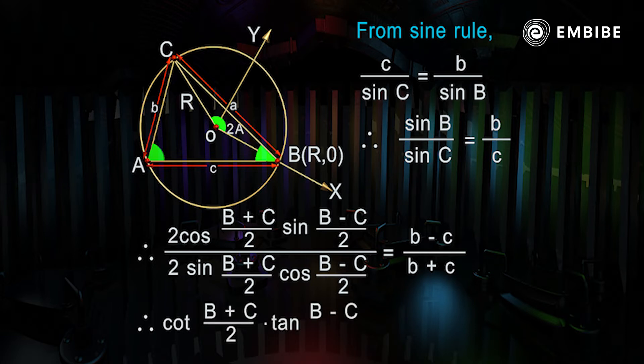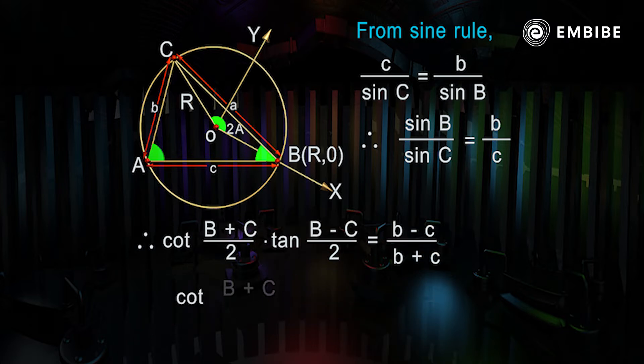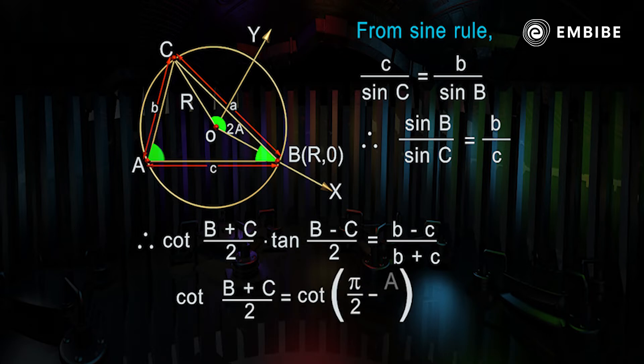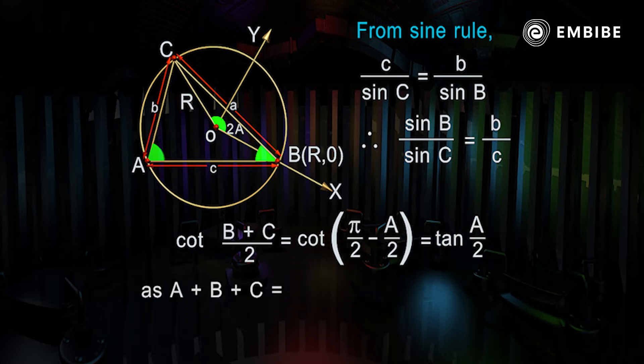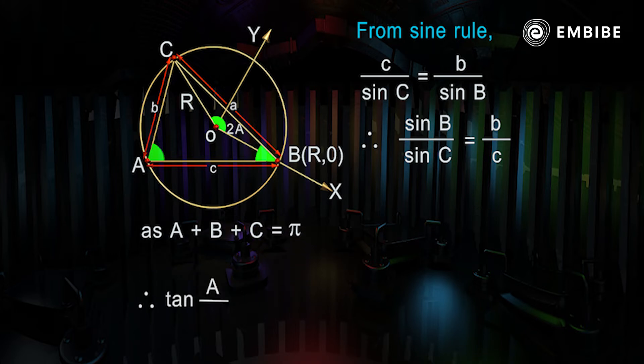Now cot of B plus C over 2 is equal to cot of pi by 2 minus A by 2, which equals tan A by 2, as A plus B plus C equals pi. Therefore, tan A over 2 times tan of B minus C over 2 is equal to b minus c over b plus c.